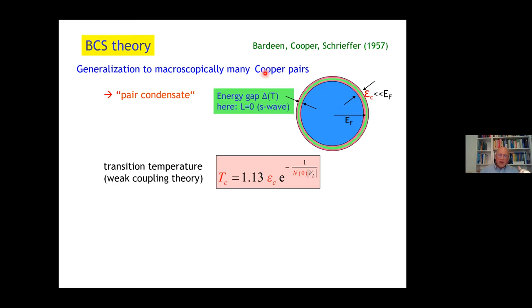BCS theory is the generalization to many Cooper pairs. Pairs then condensate, we speak of a pair condensate. For the simplest case of s-wave pairing, we have an isotropic gap around the Fermi body, protecting the inside from the outside.